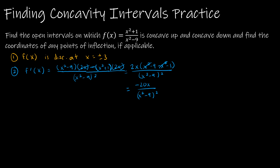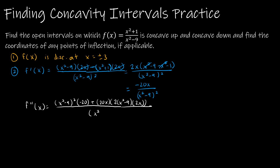Since I'm finding intervals of concavity, I power through to find f double prime of x — the derivative of the derivative. Using the quotient rule again: bottom times the derivative of the top, minus the top times the derivative of the bottom. The bottom term uses the chain rule: 2 times x squared minus 9 to the first, times 2x. The denominator becomes x squared minus 9 squared, squared — or to the fourth power.